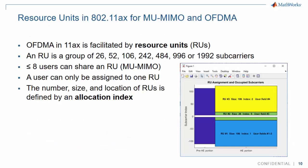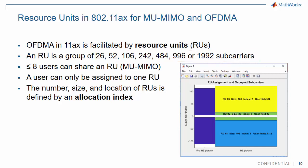Let's have a more detailed look at the more interesting case, which is multi-user configuration. For multi-user configuration, the spectrum is divided into resource units, where each resource unit contains one of a fixed set of subcarriers. The number, size, and location of resource units is defined by an allocation index.